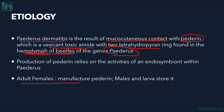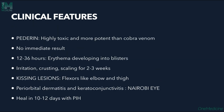Production of paederin relies on an endosymbiotic relationship within Paederus. Adult females produce paederin, whereas males and larvae only store it. Paederin is highly toxic and more potent than cobra venom. There are no immediate results seen; after 12–36 hours, edema develops into blisters. Irritation, crusting, and scaling can be seen for 2–3 weeks.